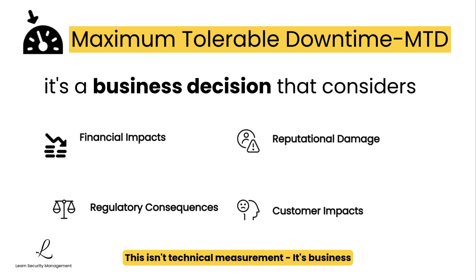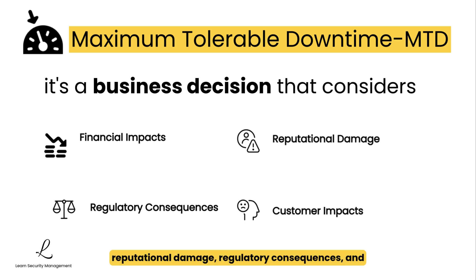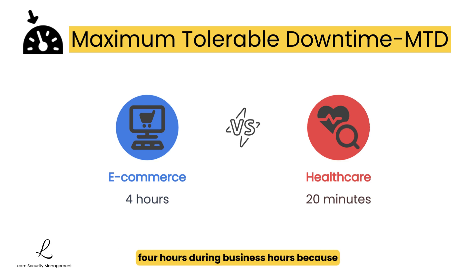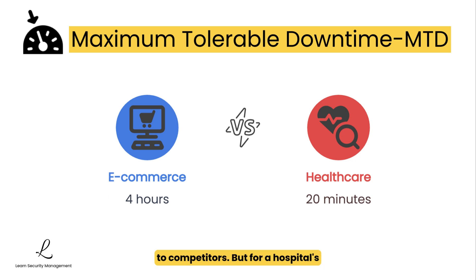This isn't a technical measurement. It's a business decision that considers financial impact, reputational damage, regulatory consequences, and customer impacts. For example, an e-commerce platform might determine their MTD is four hours during business hours, because beyond that point they will lose customers permanently to competitors.